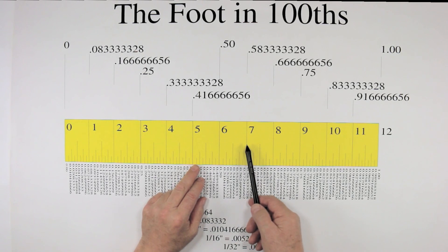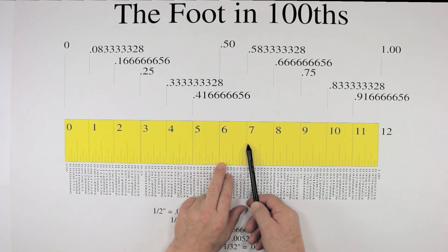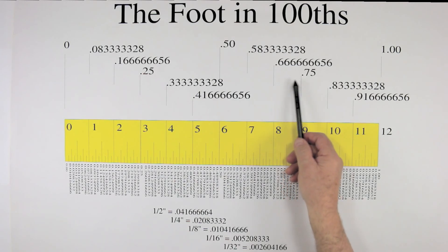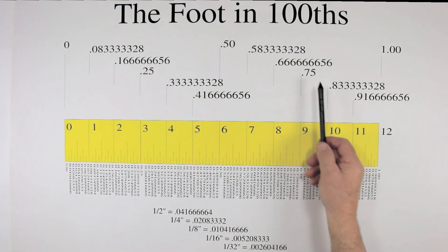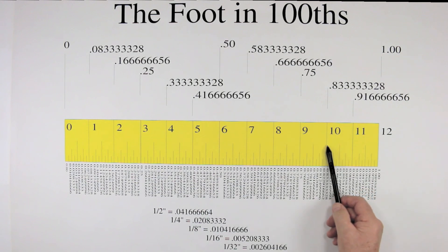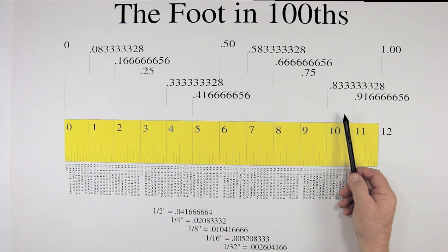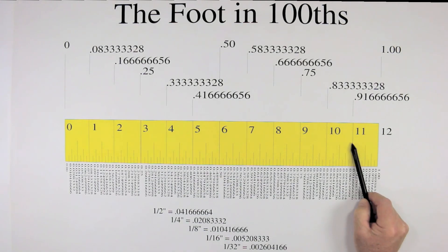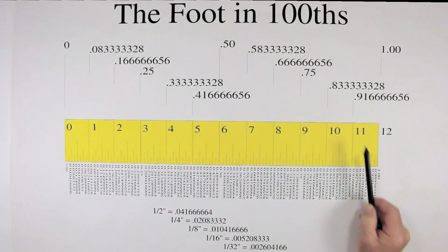Add another inch and we get six inches at 0.50. Seven inches at 0.583333. Eight inches at 0.666666. Nine inches at 0.75. Ten inches at 0.833333. And eleven inches at 0.916666.